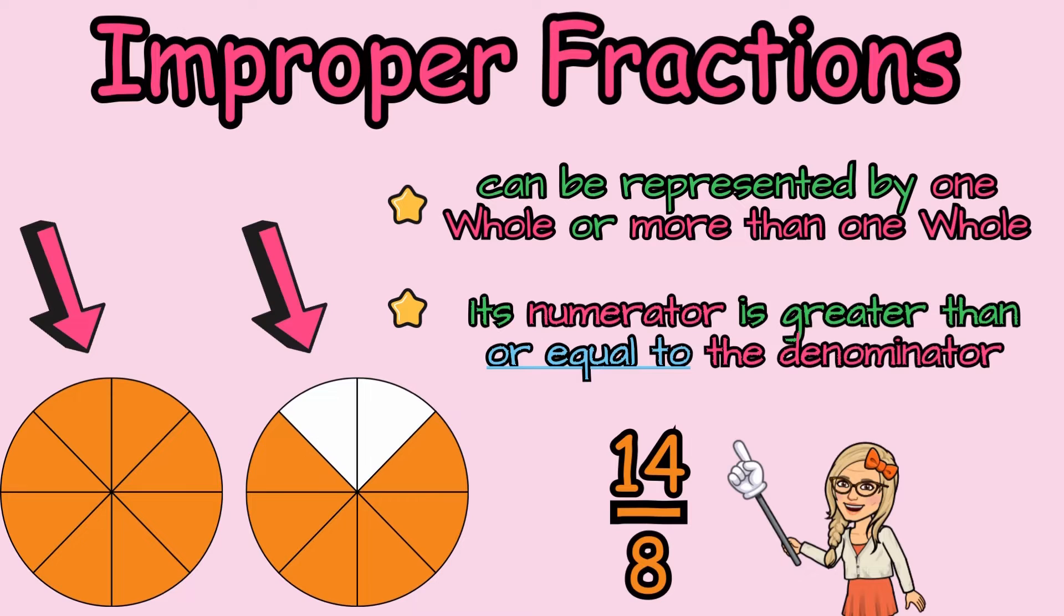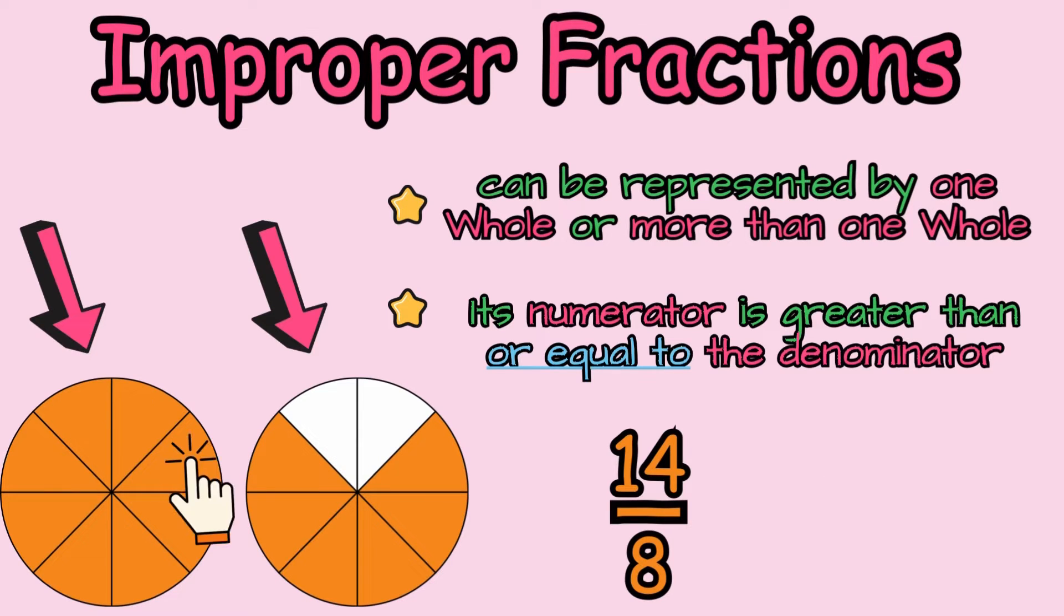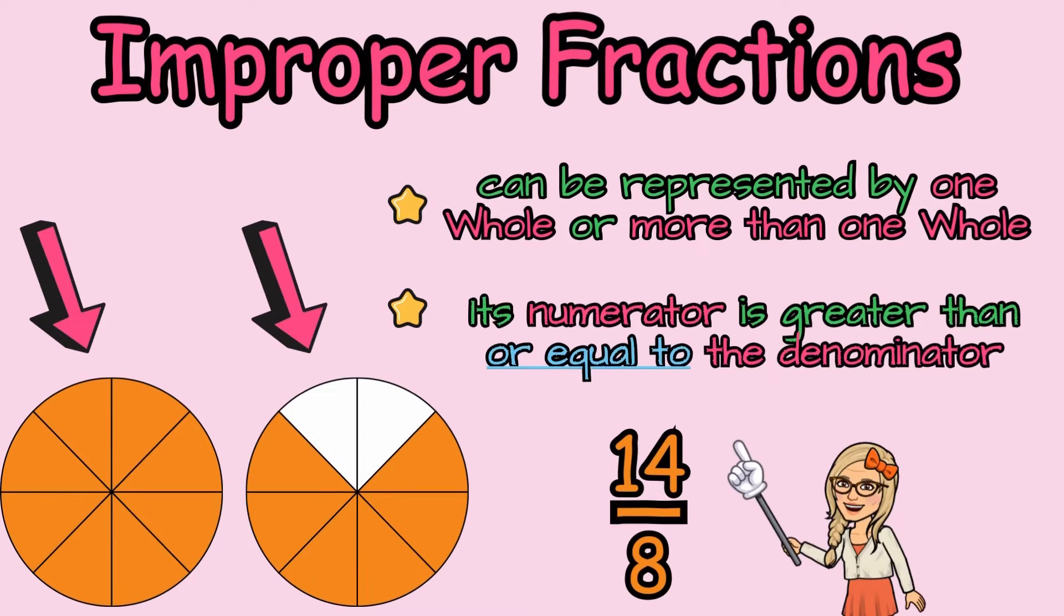Then I have to count the shaded parts so that I can find my numerator. And in this case, as you can see, I have 14 shaded parts. So that's why my numerator is 14.